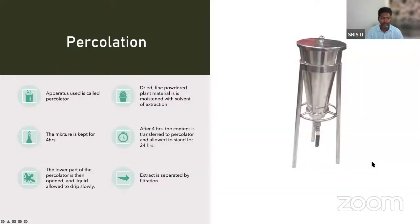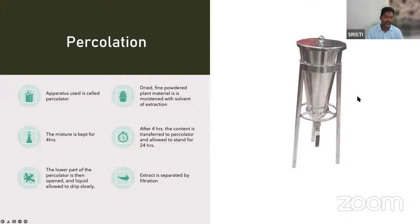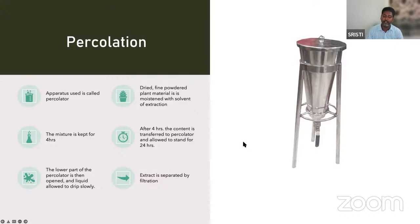The next method is percolation — similar to a filter coffee apparatus used in South India. The apparatus is called a percolator. Dried fine powder plant material is moistened with the extraction solvent, kept for 4 hours, then transferred to the percolator and allowed to stand for 24 hours. After 24 hours, the lower part is opened and the liquid drips slowly, is collected, filtered, and used for further studies.